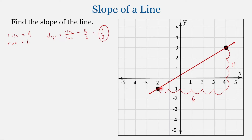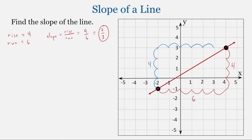Now in this example I did the run first and then the rise, but you can also do the rise first and then the run. So in this case we'd go 1, 2, 3, 4 — that distance is 4, so we have a rise of 4. And then starting from that point we'd go 1, 2, 3, 4, 5, 6 — giving us a run of 6. Those are the same values, resulting in the same slope.